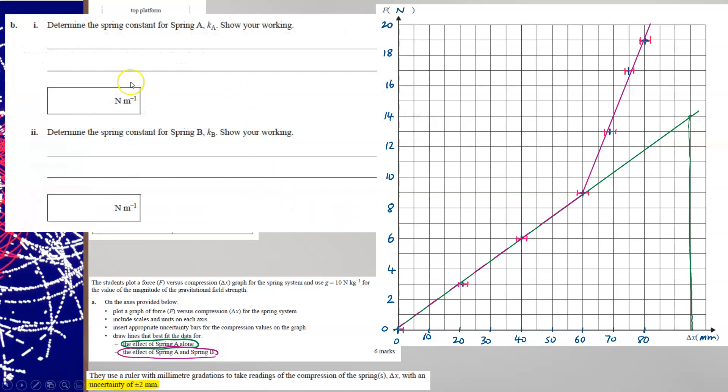Next part of the question asks you to determine the spring constant Ka for spring A. So knowing that f equals kx, you can calculate the spring constant f over x. And just spring A is, of course, the green line.